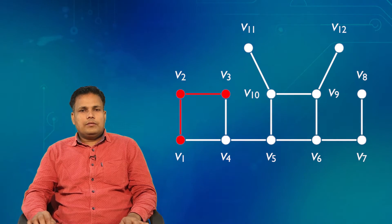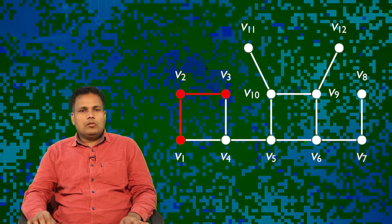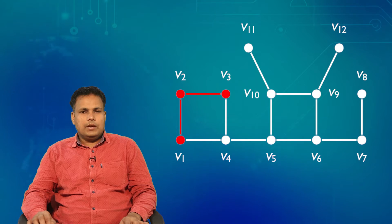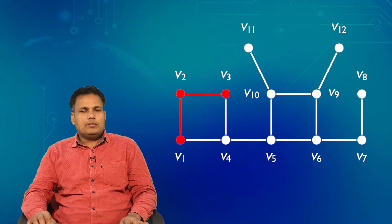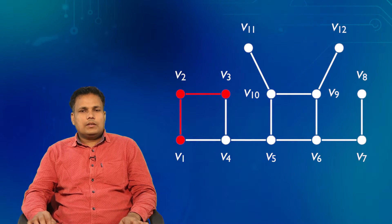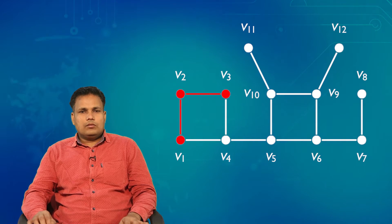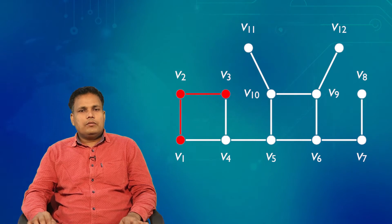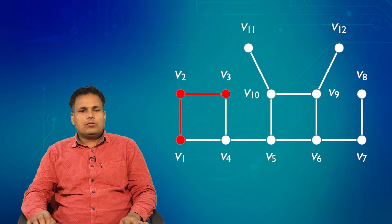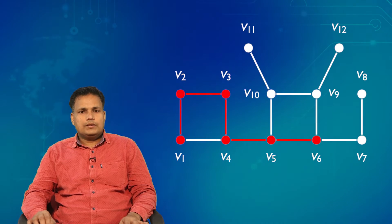We shall first visit all the neighbors of V3 and then go to V4. Similarly, if there are any other neighbors of V2, we shall go back to them only after exploring all the neighbors of V3. At any current vertex, we explore all its neighbors and then go to the neighbors of its parent. Now let us visit the vertex V3, then from V3 we go to V4, then V5, V6, V7, V8.